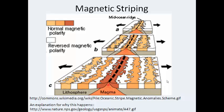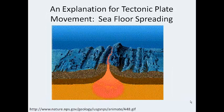Another piece of evidence discovered after Wegener was magnetic striping, also associated with the Mid-Atlantic Ridge. As you move further from the ridge in each direction, the rock's magnetic striping alternates. The Earth's magnetic field regularly reverses itself — north becomes south and south becomes north — and the rocks of the ocean floor record this, showing alternating polarity. This is related to the phenomenon of seafloor spreading.